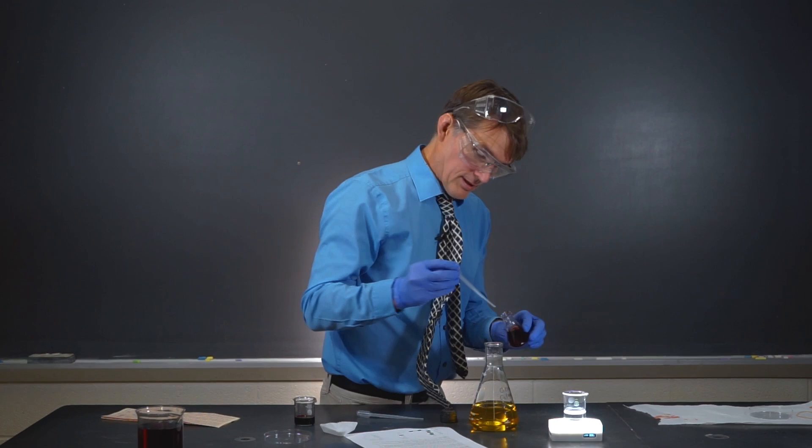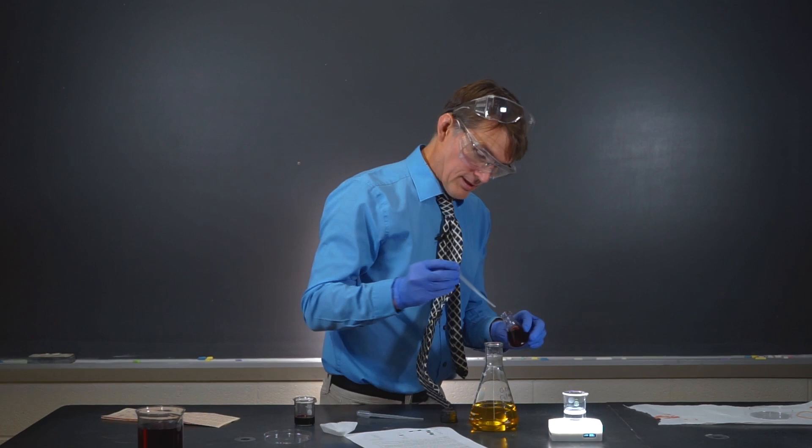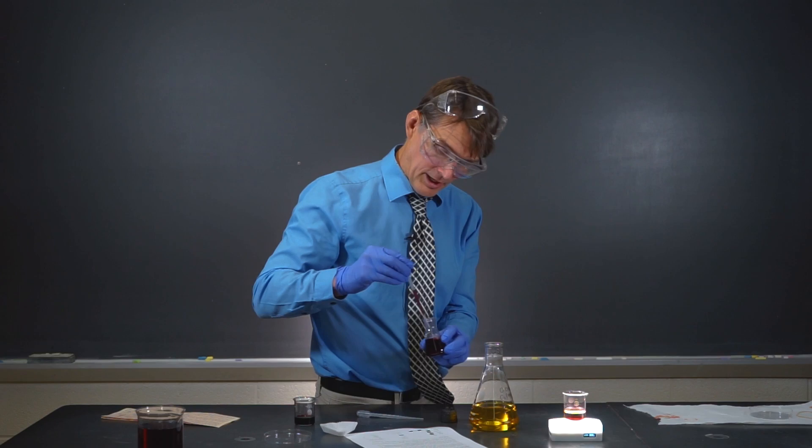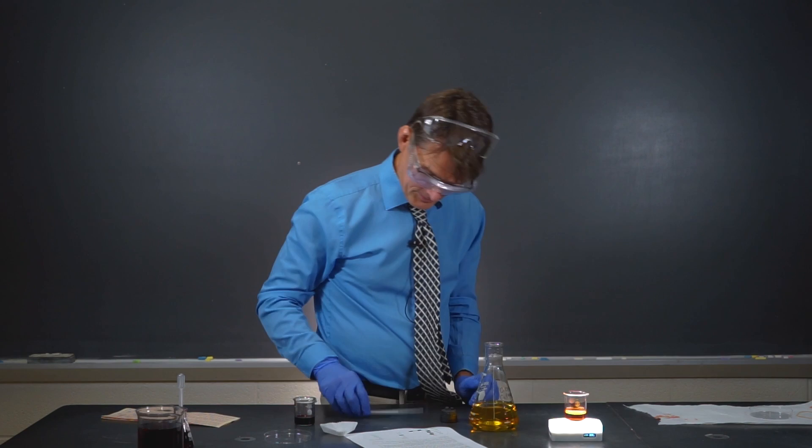Okay, we're going to add a little bit of this iron indicator solution. Remember, it's got iron 2 ions in it. And those are going to look red, of course. Our iron indicator looks red in the presence of iron 2. And let's show you how we can get that blue color by adding some cerium 4 ions, which are yellow.